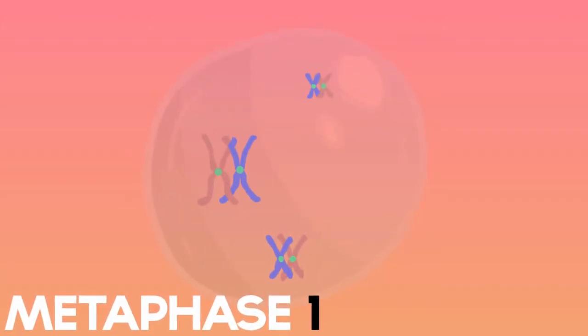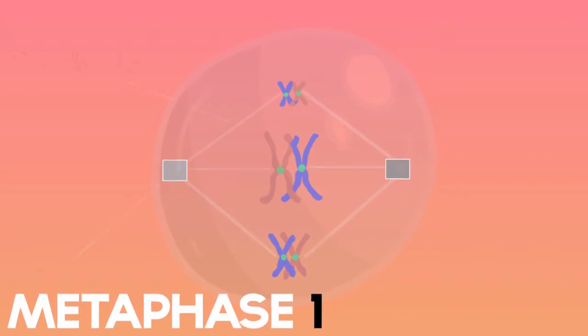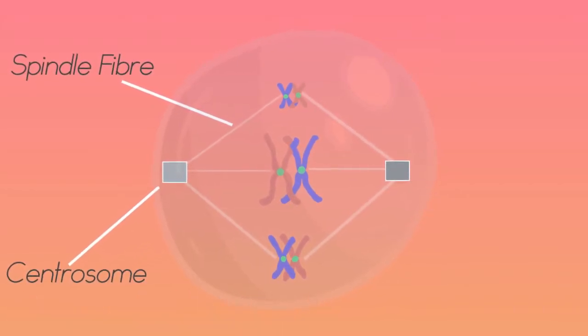During metaphase I, the homologous chromosomes are aligned at the equator. They are being held at their centromeres by spindle fibers.